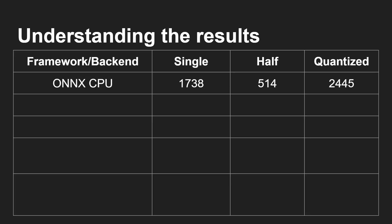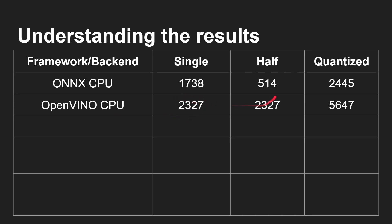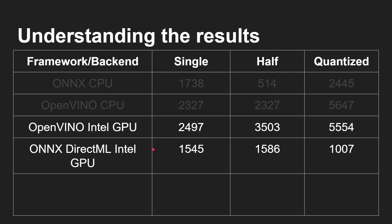Running on the CPU using the ONNX framework gives certain scores, but switching to OpenVINO gives much higher scores for single precision, half precision, and quantized. So by moving to a different framework, you get a whole different set of performance results — which would be important if you were a developer thinking about what framework to support. Moving to the GPU with OpenVINO gives very good numbers, but using DirectML with ONNX on the Intel GPU brings the numbers back down.